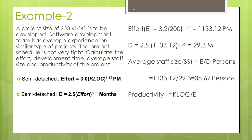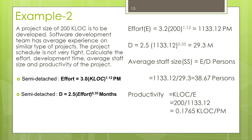Productivity is equal to KLOC divided by effort. Here we have 200 KLOC and effort is 1133.12 person-months. Substituting these values gives a productivity of 0.1765 KLOC per person-month. This can be converted to LOC by multiplying by 1000, so the final answer for productivity is 176 LOC per person-month.